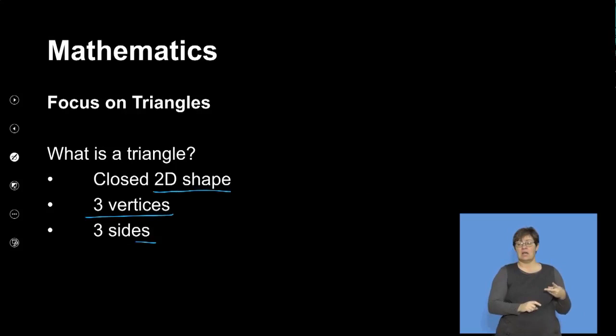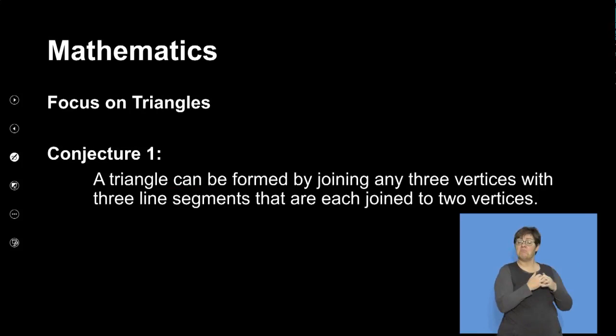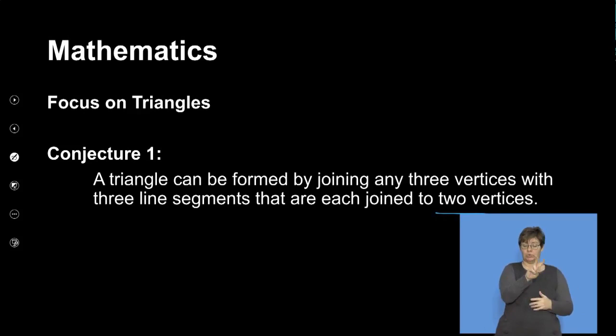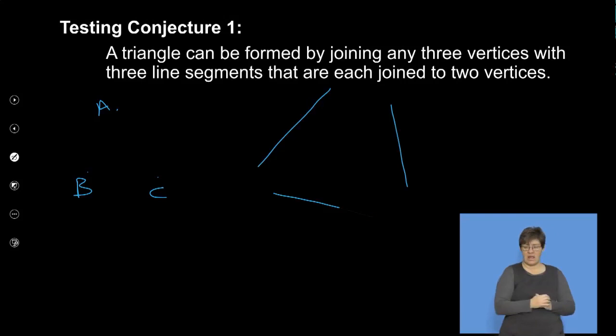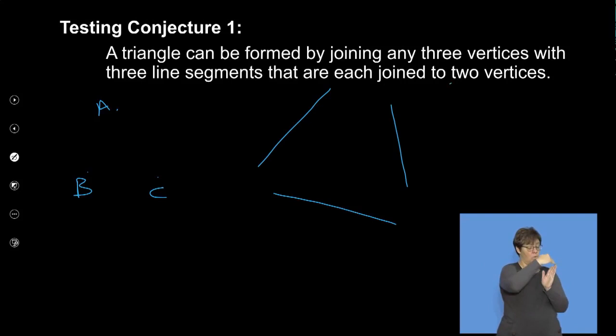Remember what a triangle is — a closed 2D shape with three vertices and three sides. One conjecture we can make is: a triangle can be formed by joining any three vertices with three line segments, each joined to two vertices. This means I have point A, point B, and point C, and I draw a line between each pair. Each line needs to be between two vertices — that's what the statement says.